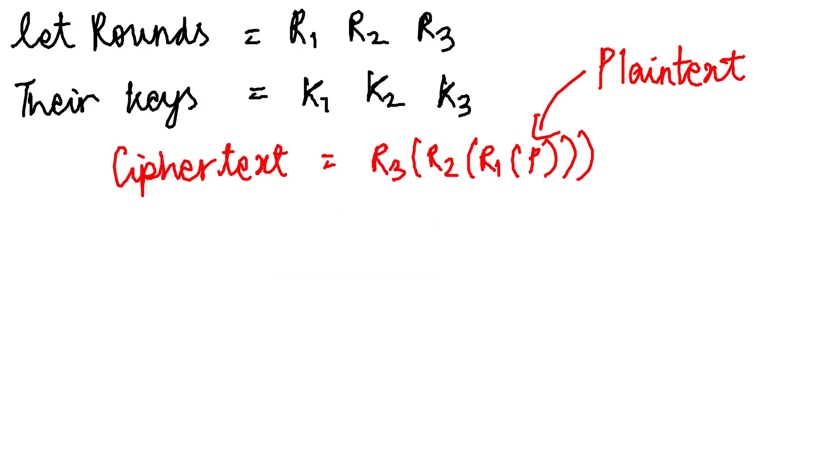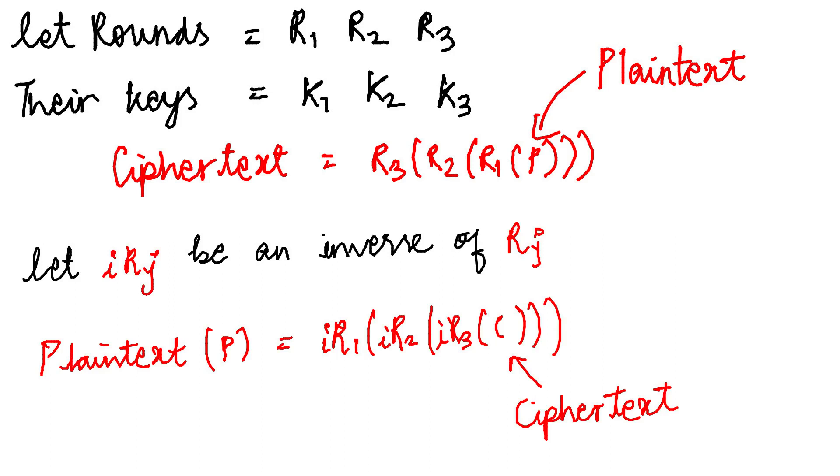Let R1, R2, and Rn be the rounds taking in K1, K2, and so on up to Kn as keys. So the ciphertext becomes R3 of R2 of R1 of the plaintext. Similarly, if you want to decrypt it and get its corresponding plaintext, you can use the inverse of R1 of inverse of R2 of inverse of R3 of the ciphertext.